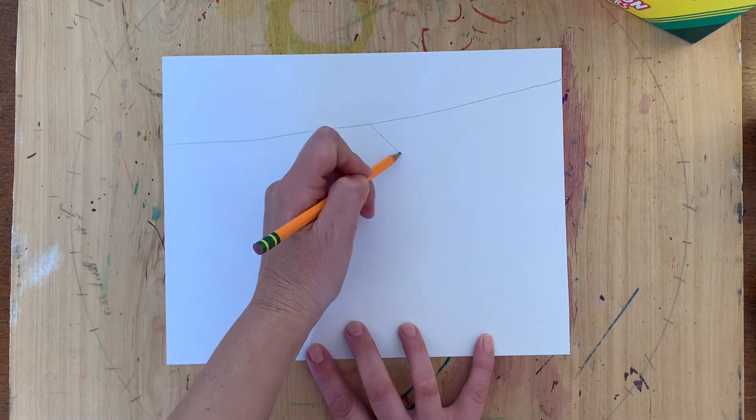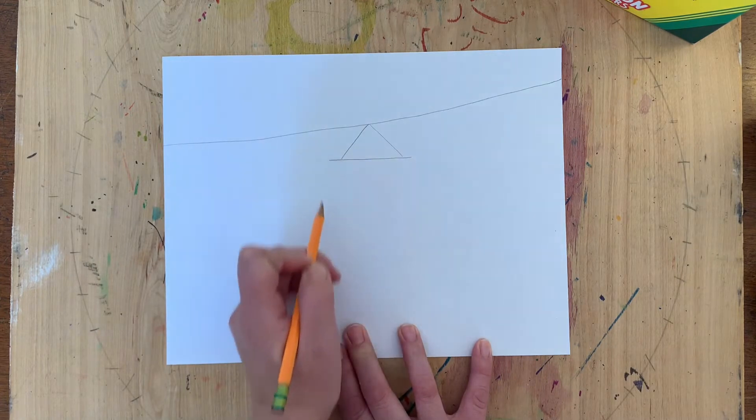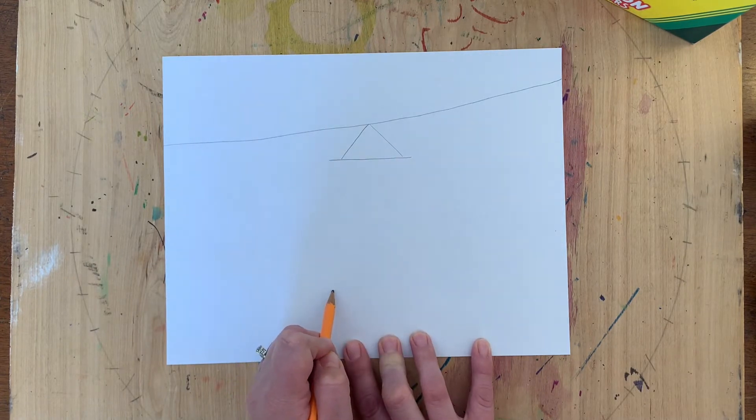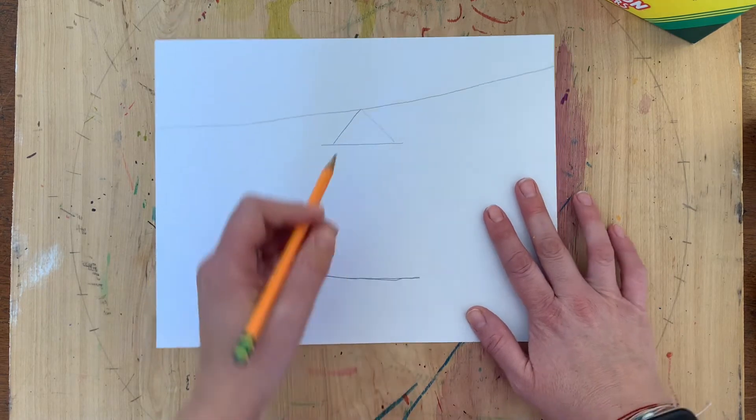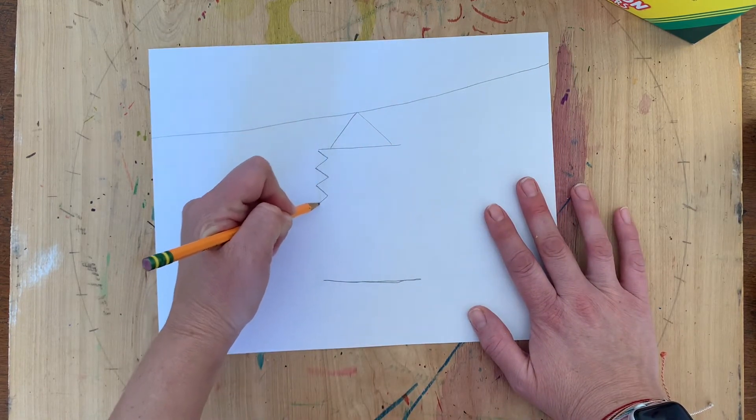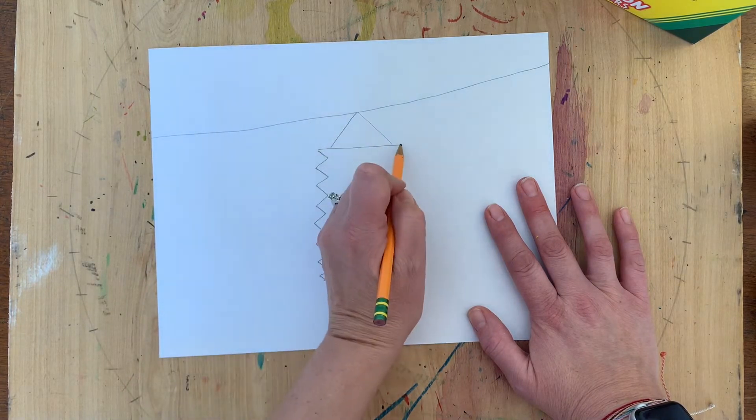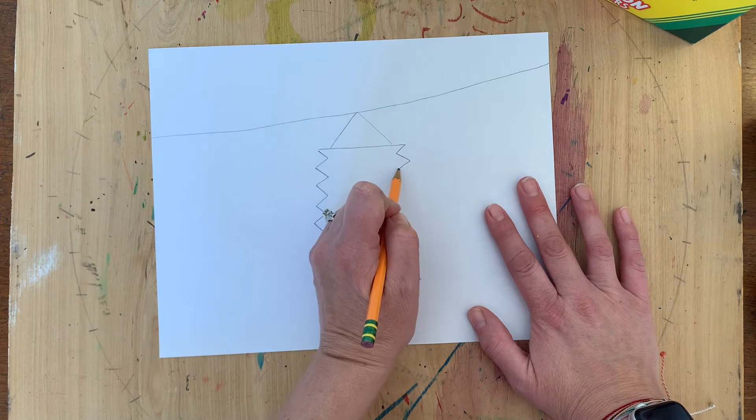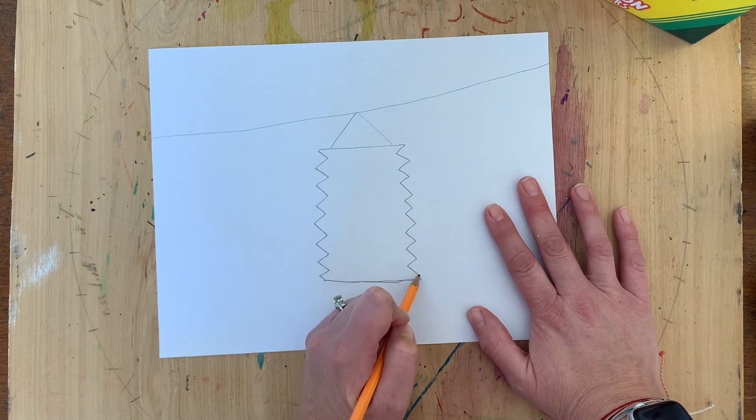So in the center I'm going to come down where my lantern's hanging, make a line, and then a line at the bottom. My table's a little crooked. And then from here you'll add zigzag lines coming down to show your lantern folds. These do not have to be symmetrical, they don't have to match.